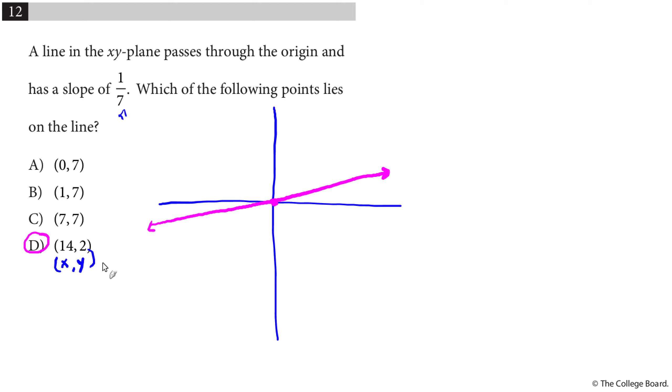A better way to do this would be the following. If it passes through the origin, that means that the y intercept is 0. If it has 1/7 slope, that means my slope is 1/7. And so I can write the slope intercept form of this line, y equals 1/7 x plus 0. And then I can just check the points. If I put 0 in for x, does 7 equal 1/7 times 0? And the answer is no. Does 7 equal 1/7 times 1? And again, the answer is no. 7 is not 1/7. Does 7 equal 1/7 times 7? The answer again, no. 7 is not equal to 1. But finally, does 2 equal 1/7 of 14? Or which is the same thing as 14 divided by 7? And the answer is yes. That's my answer.